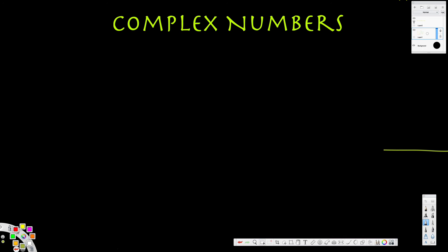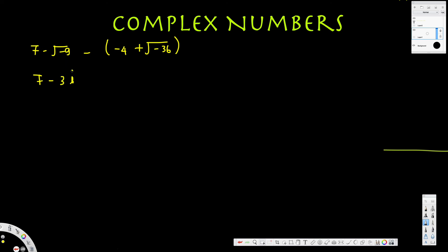Let's try another one. We have 7 minus square root of negative 9, minus the quantity negative 4 plus square root of negative 36. Square root of negative 9 is 3i, so we have 7 minus 3i.